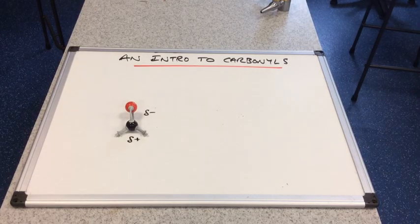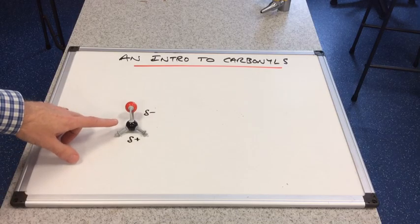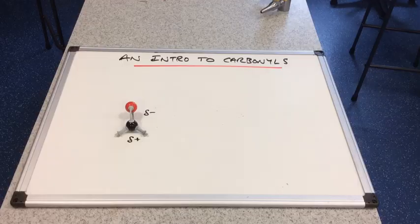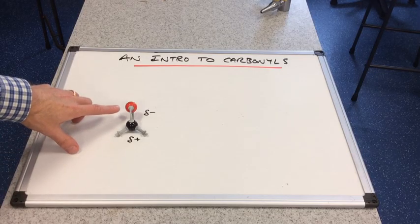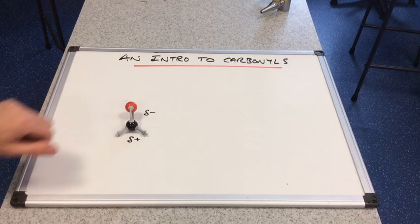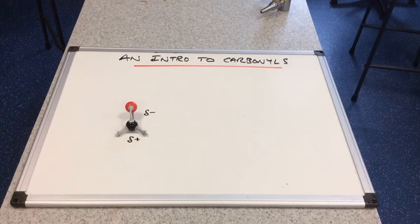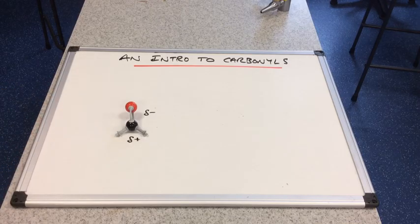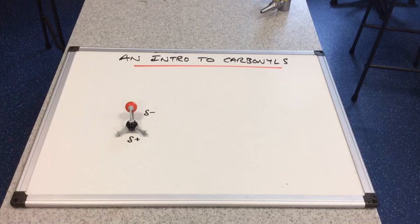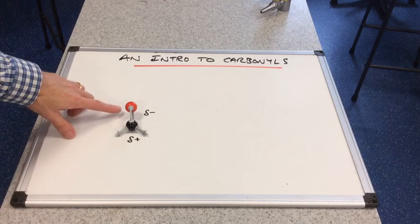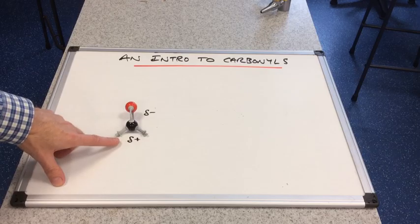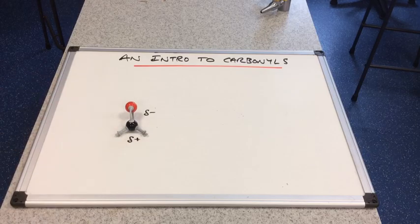Because of differences in electronegativity between oxygen and carbon - remember oxygen is the second most electronegative element - this part of the carbonyl bond is going to be slightly more negative because it's got a greater share of the electron pair in the bond. So this part of a carbonyl group is delta minus and this part is delta positive. We've got a dipole across this bond.